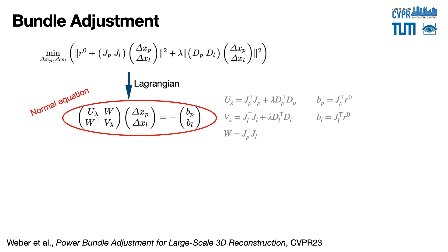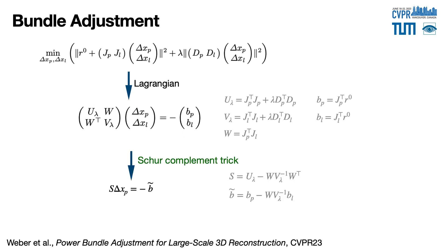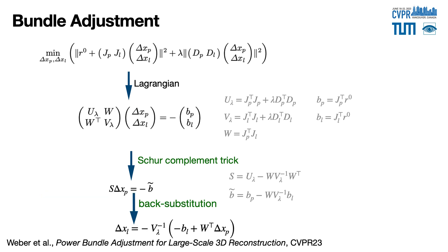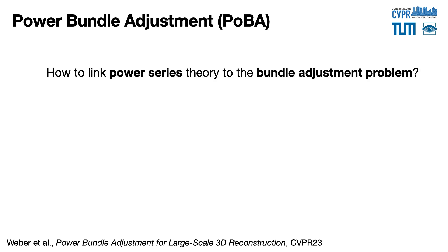Minimization leads to the corresponding normal equation. As the system matrix tends to be excessively costly for large-scale problems, it is common to reduce it by using the Schur complement trick and forming the reduced camera system. Once it has been solved, we back-substitute the pose delta to get the landmark delta.